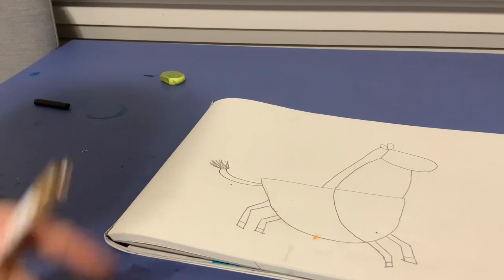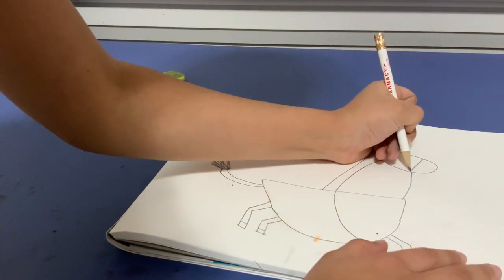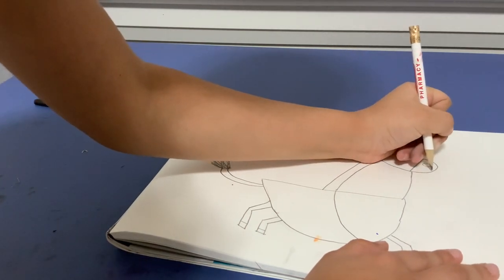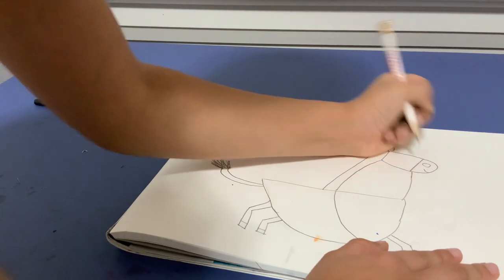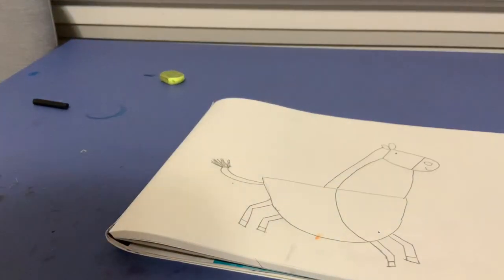Then we're going to add some of its face details. So for its face details we're going to make a line just like this. Then we're going to add a circle and we're going to add a smile just like this. Then we're going to add its eyes. We're going to make a small dot for its eyes.